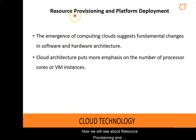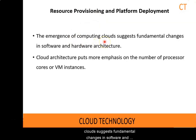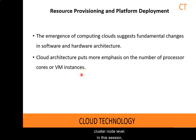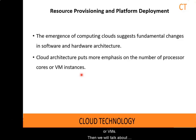Now we will see about resource provisioning and platform deployment. The emergence of computing clouds suggests fundamental changes in software and hardware architecture. Cloud architecture puts more emphasis on the number of processor cores or VM instances. The parallelism is exploited at the cluster node level. In this session, we will discuss the techniques to provision compute resources or VMs, and then talk about storage allocation schemes to interconnect distributed computing infrastructure by hosting VMs dynamically.